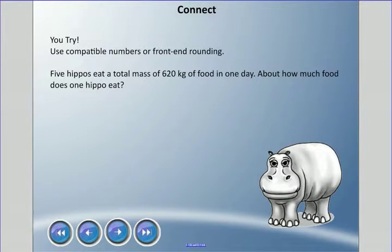Alright, last problem. Five hippos eat a total mass of 620 kilograms of food in one day. About how much food does one hippo eat? Pause and come back when you're ready. Okay, so we're going to have 620 here and we're going to divide by 5. Now you could find an exact answer to that because it ends in a zero, but we're not going to do that though.